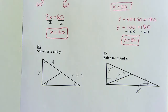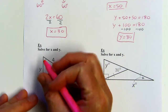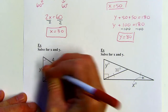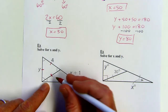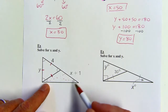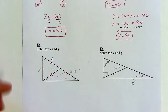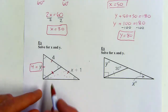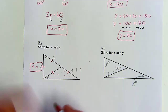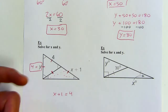The next set of problems involve more than one triangle. The first triangle is equiangular, which means it's also equilateral, so those three sides are all congruent. In the other triangle, two congruent angles mean the sides across from those are congruent as well — I'll mark those with one tick. So y equals 4, and since the remaining side is x plus 1, I can say x plus 1 equals 4, so x equals 3.